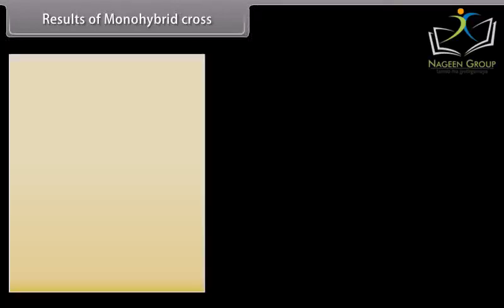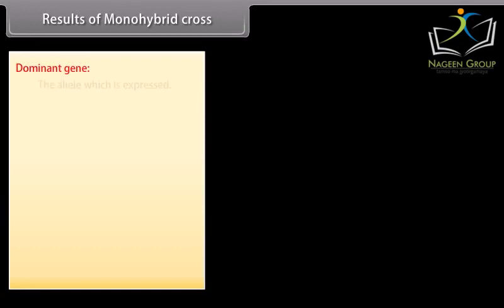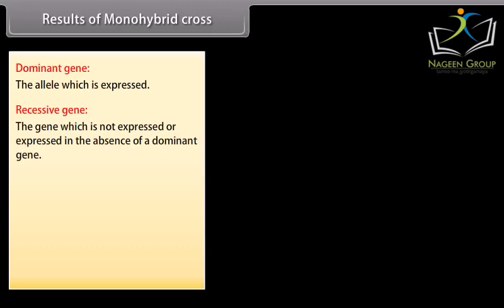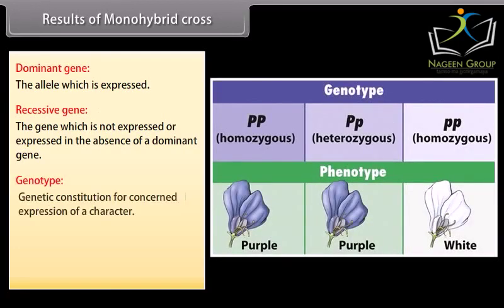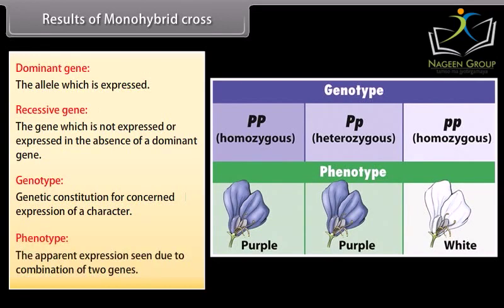Results of monohybrid cross. Dominant gene: the allele which is expressed. Recessive gene: the gene which is not expressed, or expressed only in the absence of the dominant gene. Genotype: the genetic constitution for the concerned expression of a character. Phenotype: the apparent expression seen due to the combination of two genes.